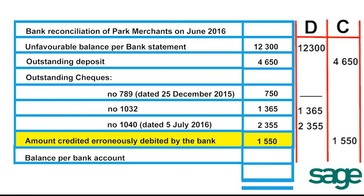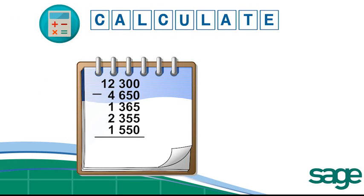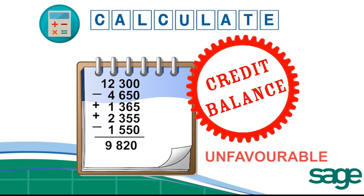When we add up the debit side and the credit side, we see that there is a missing amount on the credit side. This means the balance as per bank account is on the credit side, which means that it is unfavourable. Let's calculate it together: R12,300 minus R4,650 (the deposit), plus the cheques R1,365 plus R2,355, minus R1,550 (the error we are correcting on the credit side), leaves us with an unfavourable balance of R9,820. We know it is unfavourable because it ends up as a credit balance, and a credit balance is unfavourable according to our bank account.